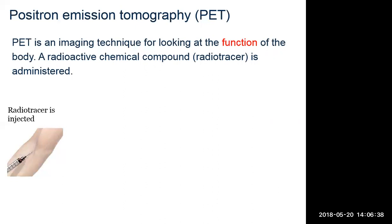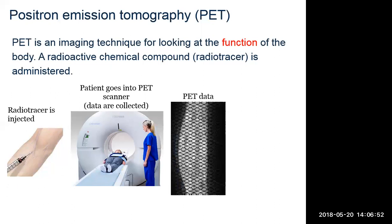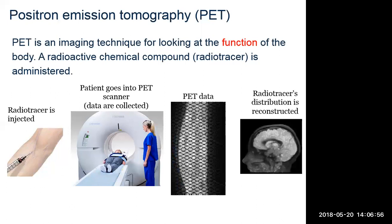So we inject the radiotracer. If we're not doing a dynamic scan, that will be injected, you'd wait, and then you'd put the patient inside the PET scanner; or if it's a dynamic scan, you put the patient inside the scanner and then inject. You collect PET data and then finally you reconstruct. This lecture will take us for the first half hour through the process of how we model PET data acquisition, because that's an important component for reconstructing images — we need to know the forward model.